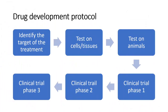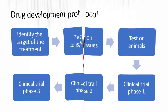In summary, the drug development protocol starts with identifying the target of the treatment, then testing on cell tissues and animals, followed by clinical trials: phase one, phase two, and phase three. If the drug passes all of these testings, the scientists apply for a license. This is the drug development protocol.